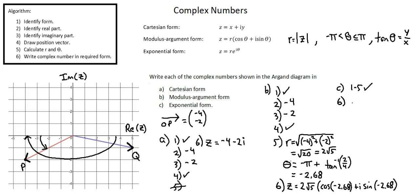And for step six, following the general form at the top of the screen, Z equals R. R we calculated as two times the square root of five times E to the power of i times theta. Our theta value is negative 2.68, so our exponent will be negative 2.68i.